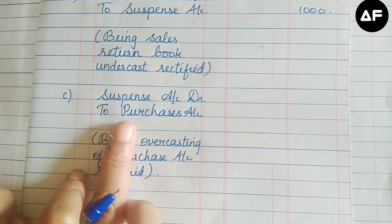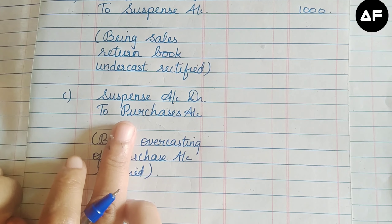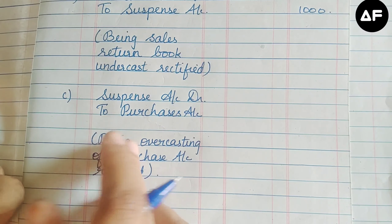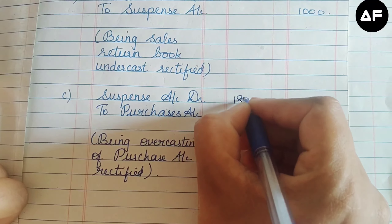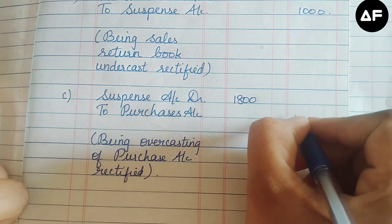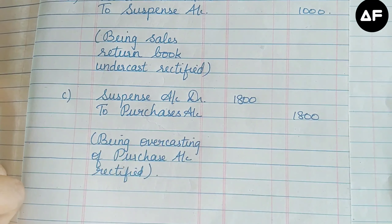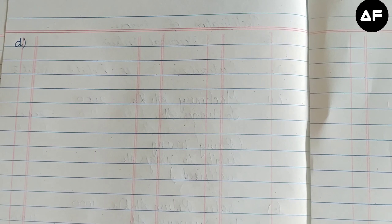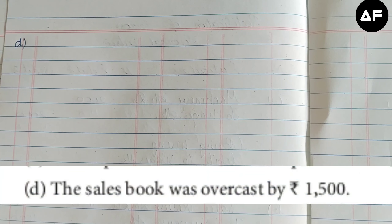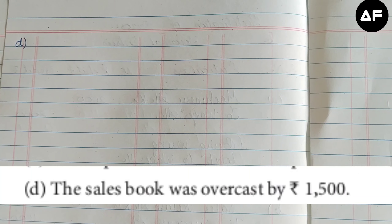The rectification entry is: Suspense Account Dr. to Purchases Account. The amount is rupees 2000 recorded minus rupees 200 correct amount, giving rupees 1800 as the value to be rectified in the purchases account.